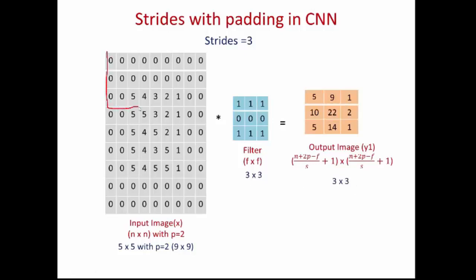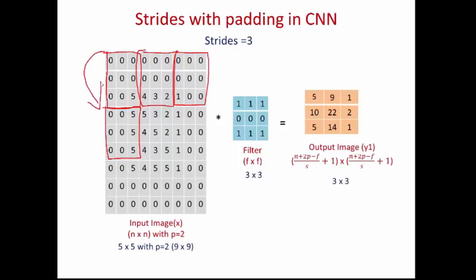For the first element of the output image, fix the filter on this position. Since stride is 3, the second element is found by moving the filter 3 pixels to the right, and the third element similarly. To find element (1,0) of the output, select the 3×3 region 3 pixels down. You move the filter to that position. To find element (2,0), shift the filter 3 pixels further down. The rest of the values are calculated similarly.